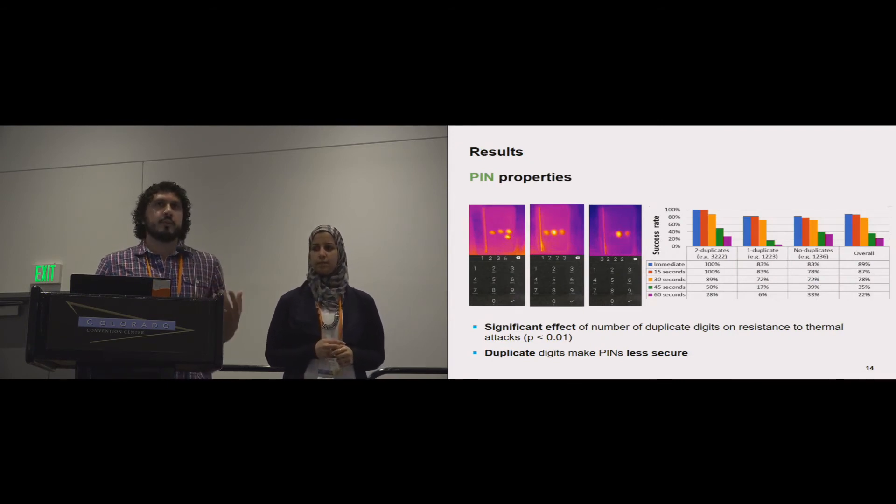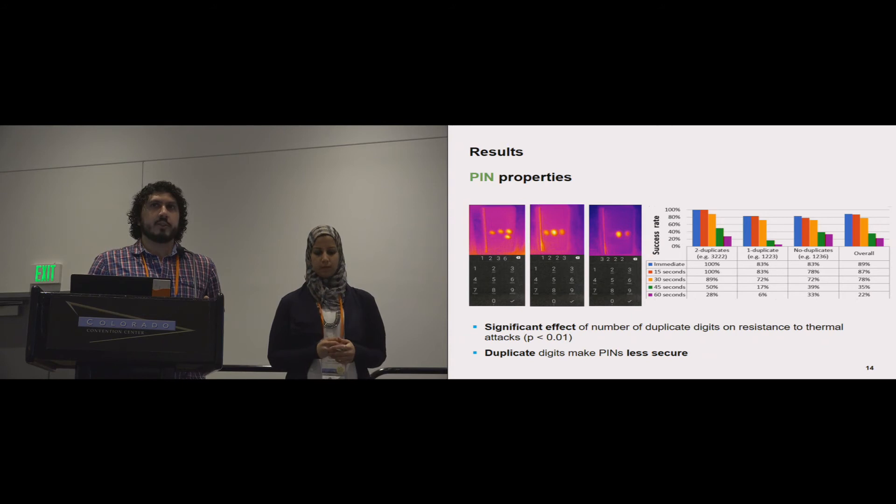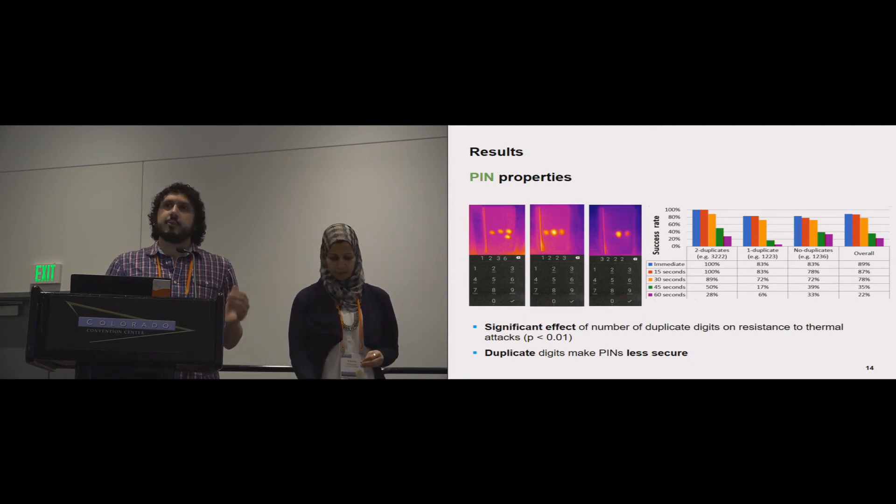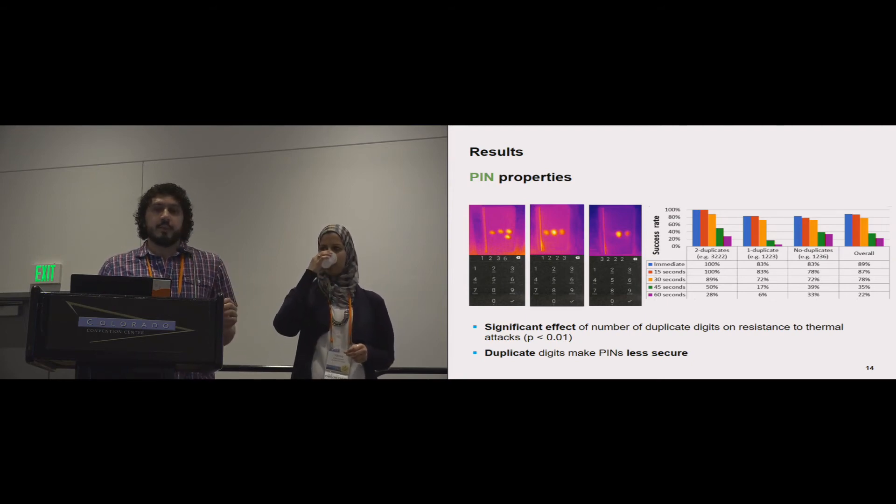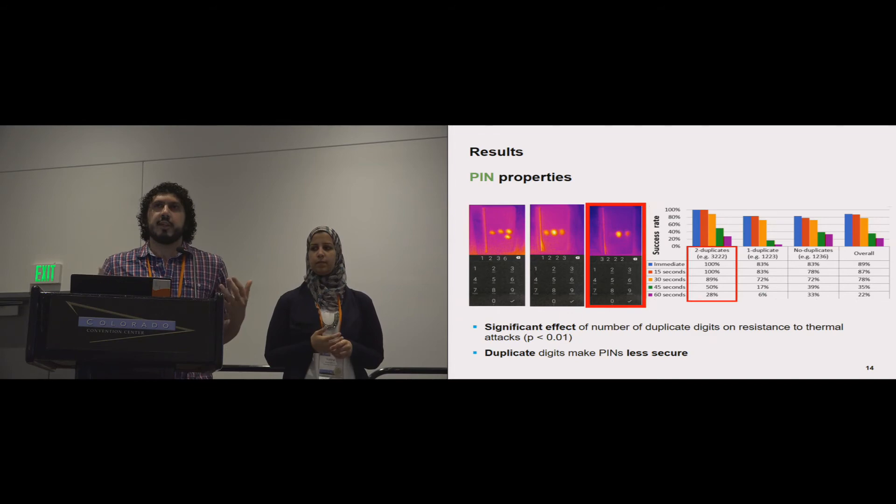So what did we find out? Actually, it turns out that the number of duplicates in the PIN has a significant effect on the success of thermal attacks. The more duplicates you have, the easier it is to perform a thermal attack. It turns out that the image processing approach that Yumna described is really good at finding whether a digit was touched once or twice or three times, and it's also really good at telling you which digit was touched last. By knowing these two pieces of information, it's pretty straightforward to come up with two or three guesses for the PIN, and you're 100% sure that the PIN is one of them. In the case of having two duplicates, we achieved 100% accuracy. All of the PINs that have two duplicates were successfully uncovered using a thermal attack right after authentication and 15 seconds after authentication.